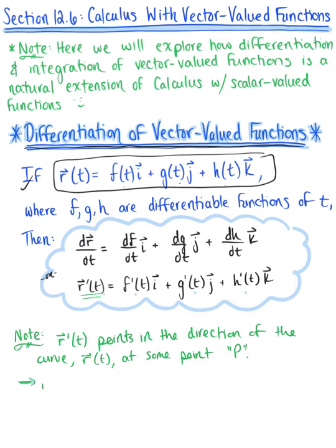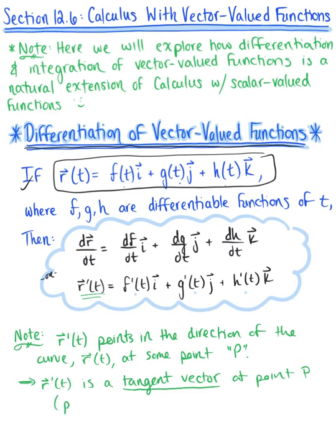Provided that r prime of t does not equal the zero vector, we say that r prime of t is a tangent vector, or velocity vector, at point p. Again, this is as long as r prime of t does not equal the zero vector.